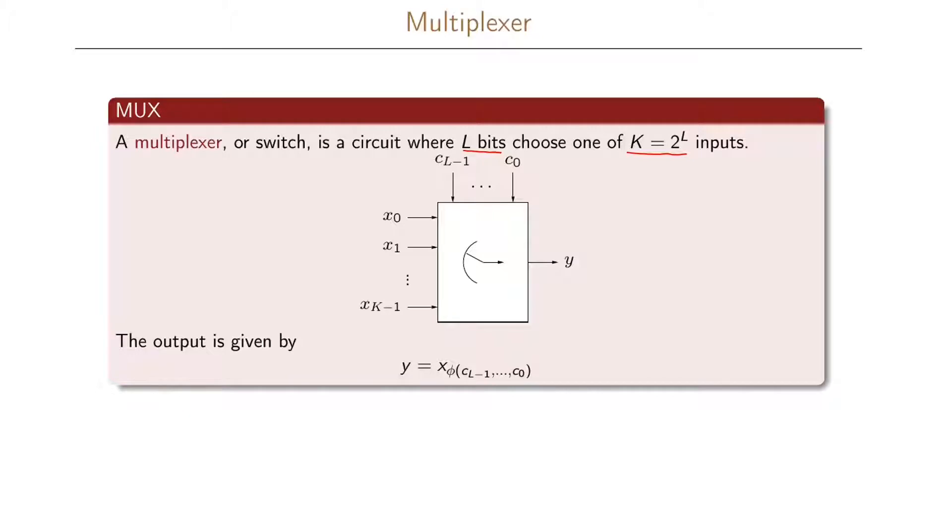For example, if we have L equals 4, then the number of inputs that we have is 2 to the L, which equals 16 in this case. This is the number of input paths that we can choose from, which we call k.